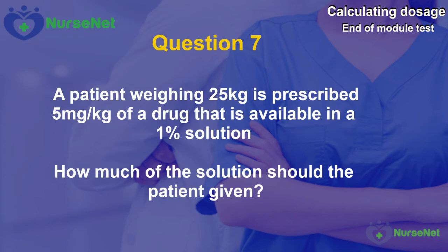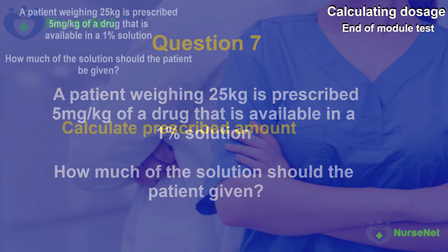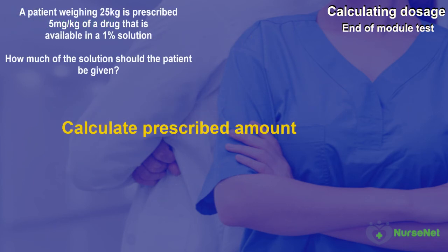Question 7. A patient weighing 25kg is prescribed 5mg per kilogram of a drug that is available in a 1% solution. How much of the solution should the patient be given? We need to break this question down into two parts: firstly we need to work out the prescribed dose, and secondly we need to work out how much of that prescribed dose we need to give in a solution.